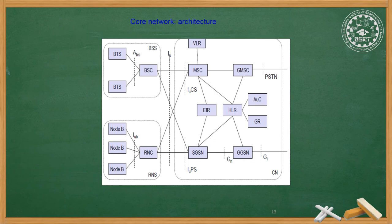This is the architecture of the core network. It has BSS in which BTS and BSC are present, connected via the ABIS interface. There is also a PSTN with VLR, MSC, GMSC, EIR, and HLR. The RNS contains Node B and RNC. All components interface and communicate with each other within this UMTS core network architecture.